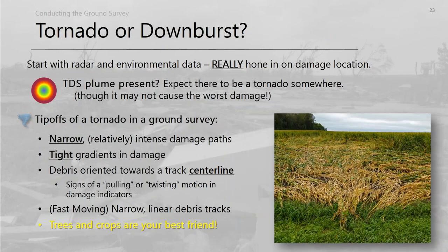Determining tornado versus downburst from a field survey can be hard. Starting with radar and environmental data is critical for getting into the right mindset. Hone in on the damage location, and if a TDS plume is present, expect a tornado somewhere, though it may not have caused the worst damage — sometimes flanking winds cause more damage than the tornado itself. Tip-offs for a tornado include narrow, intense damage paths with tight damage gradients, and debris pulled or twisted toward a centerline.